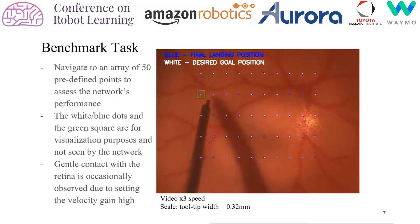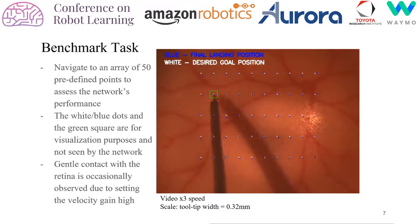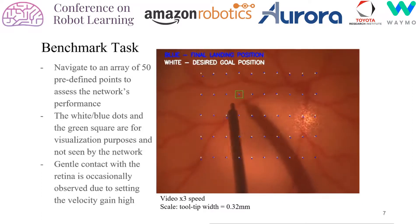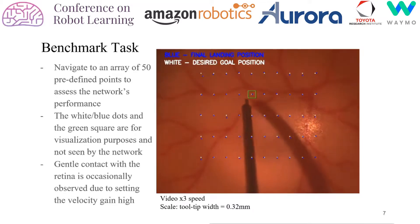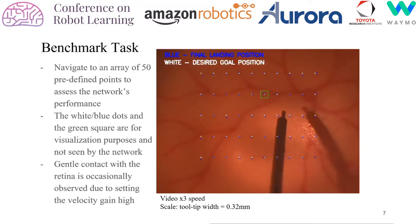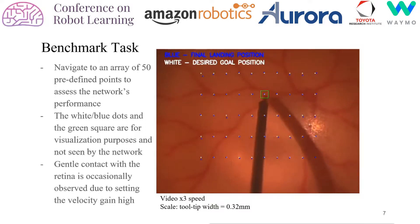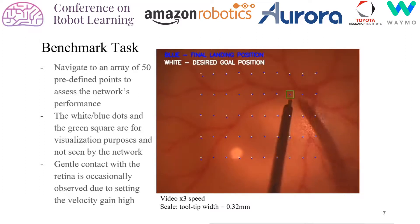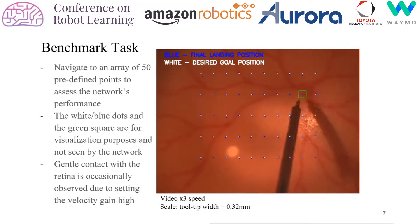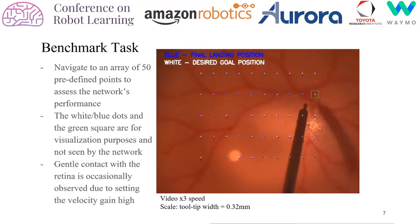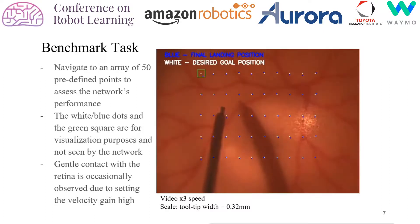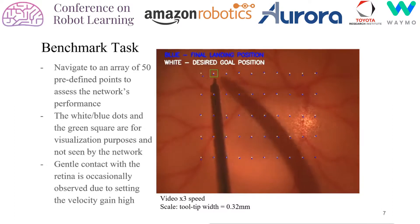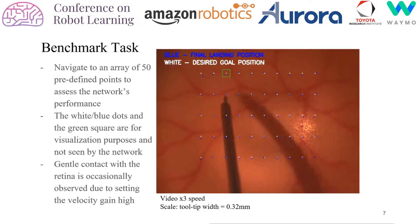Here we demonstrate the benchmark task of navigating the tool to various points across the retinal surface. The objective of this benchmark is to assess how well the network can navigate to various goal points. The white dots are the desired positions to reach and the blue dots are the final landing positions of the tooltip. The benchmark task was executed while satisfying the sclera constraint. The eye phantom was created using silicone rubber, and the error in pixel space was converted into metric space for error analysis.